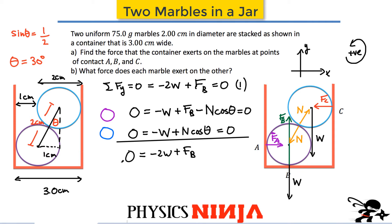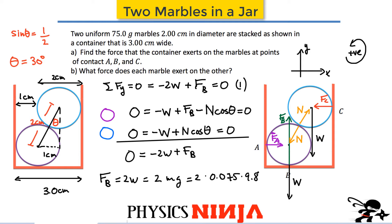Right away we can solve for FB. FB equals two times the weight, and weight is mg. So: two times 0.075 kg multiplied by g = 9.8 m/s². That gives a force FB equal to 1.47 newtons.